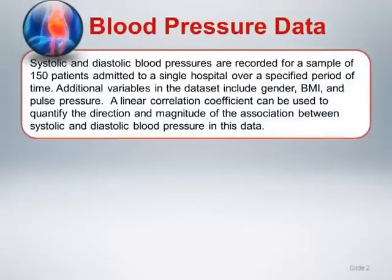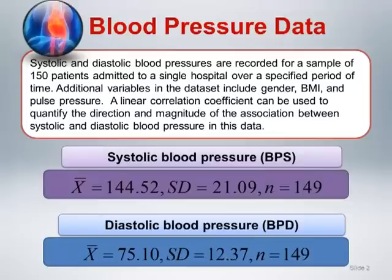Let's return to the blood pressure data used in previous modules to help demonstrate ideas related to correlation. In particular, let's focus on examining the association between systolic and diastolic blood pressure. A linear correlation coefficient can be used to quantify the direction and magnitude of the association between systolic and diastolic blood pressure in this data. There are a total of 149 subjects that have both a systolic and diastolic blood pressure measurement, and a single individual is missing both blood pressure measurements. The mean systolic blood pressure is 144.52, and the mean diastolic blood pressure is 75.10.